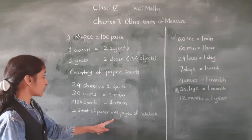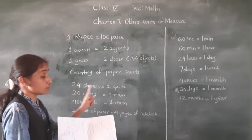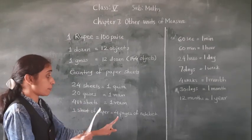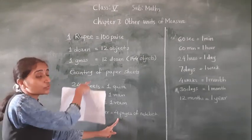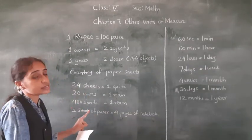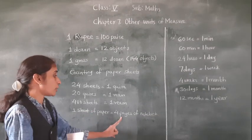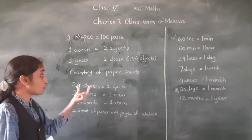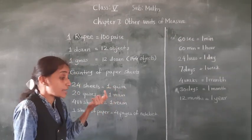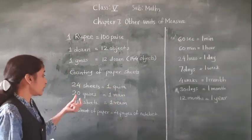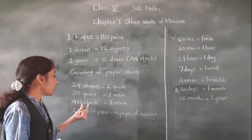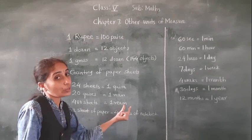I understand now. Like that way, these are 24 sheets — that means 1 quire. This is a sheet of paper with 4 pages. So same way, there are 24 sheets. 24 sheets means 1 quire. 25 means 1 ring. 480 sheets is equal to 1 ream.